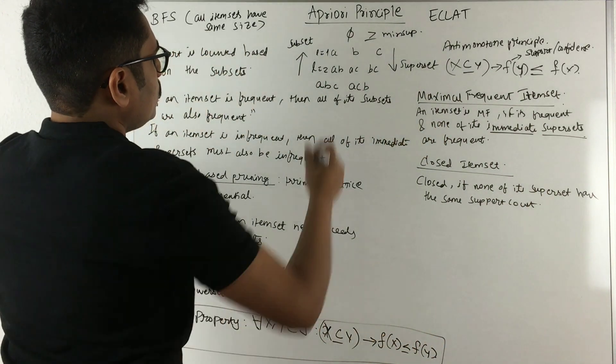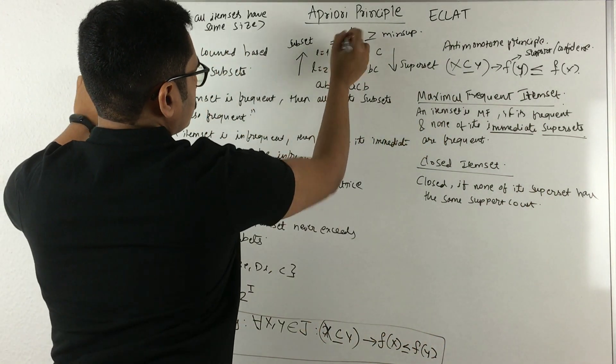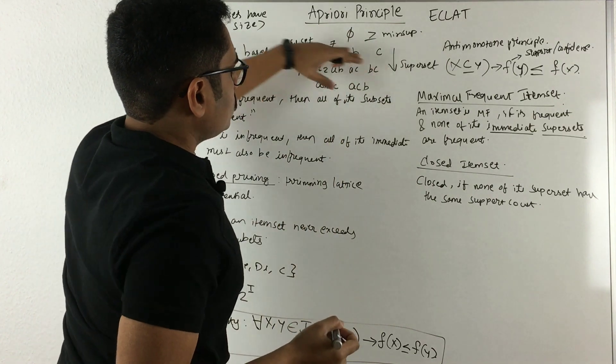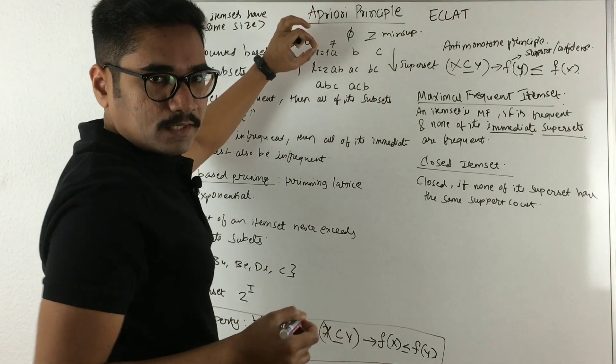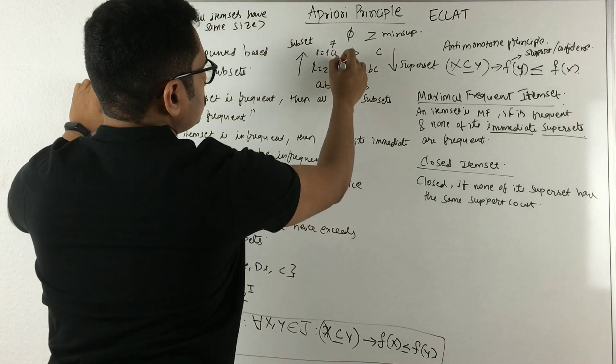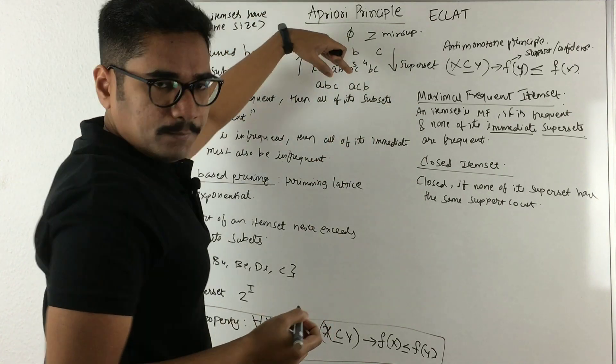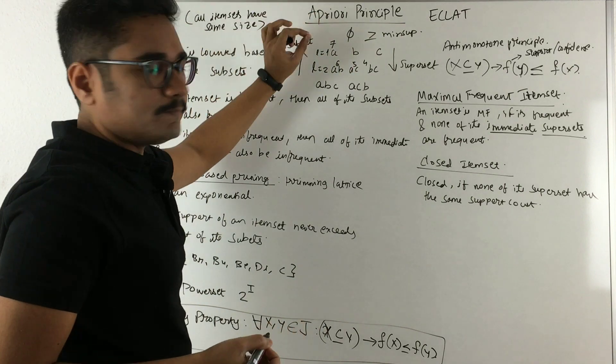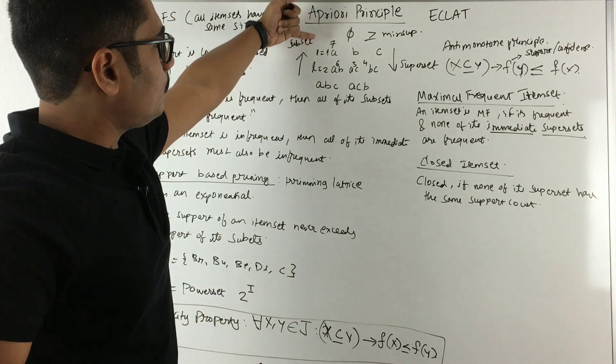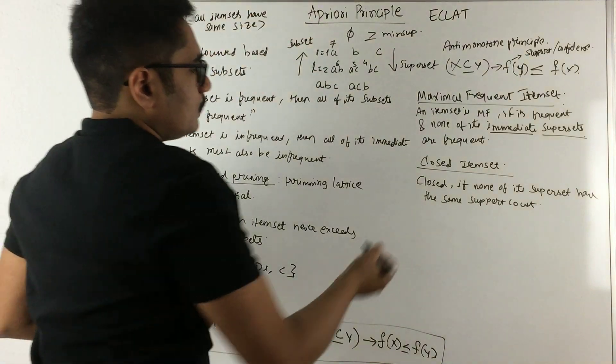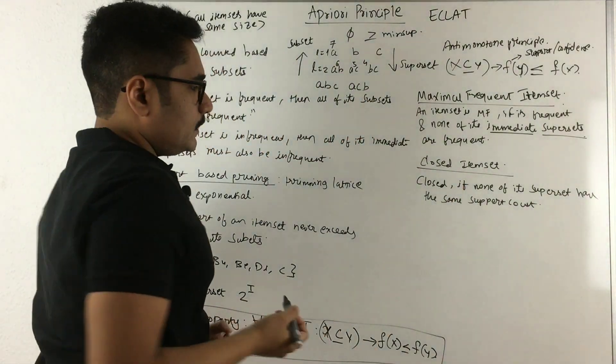Say, for example, this has a support count of seven. Then all of these should not have seven support count; it can be six or five or four. So these can be frequent, but they should not have the same support count as the first level or from the parent which it came. So that's what the closed item set is.